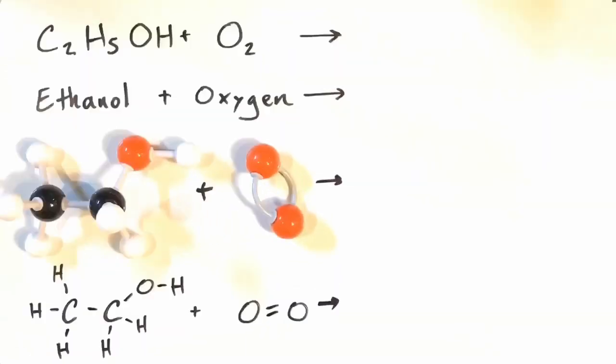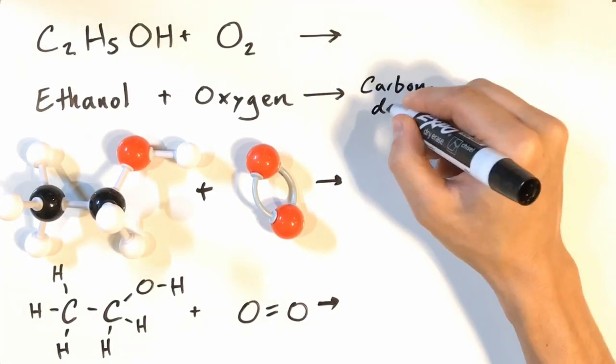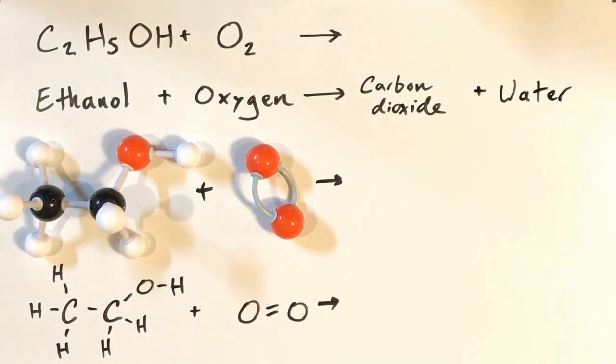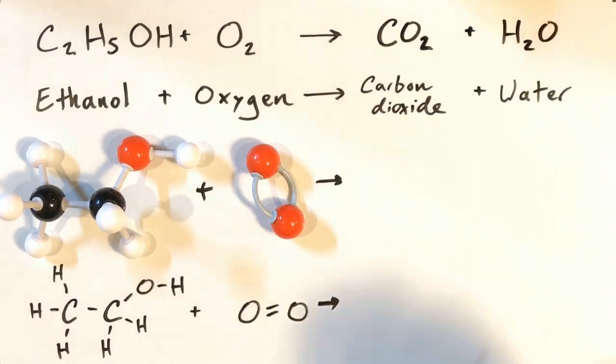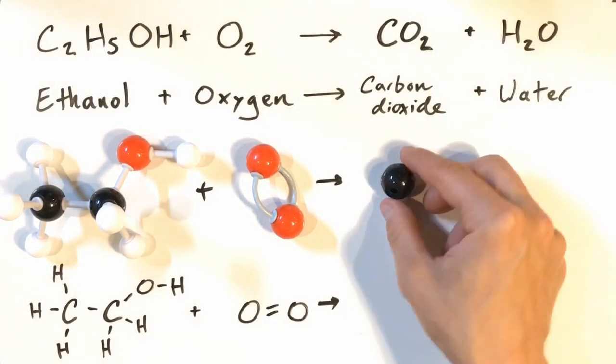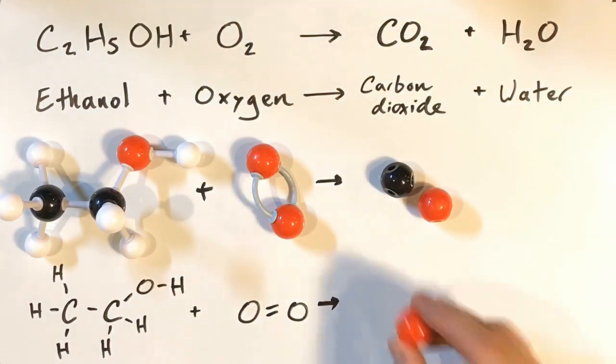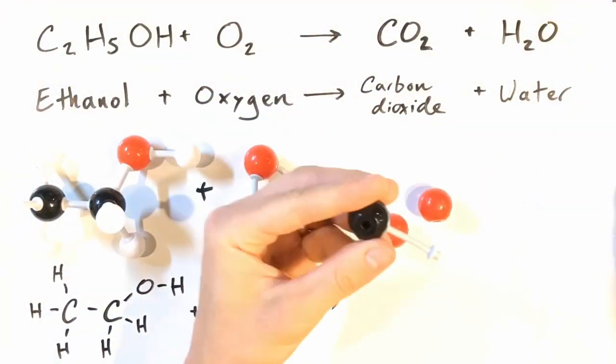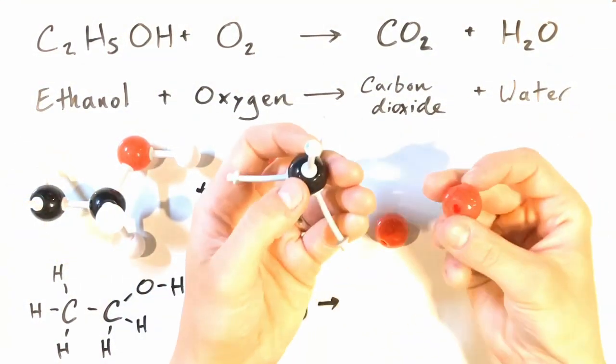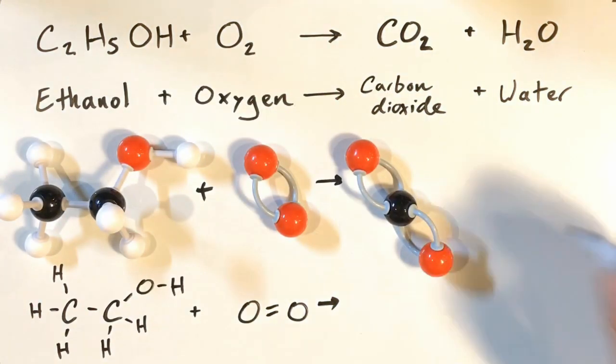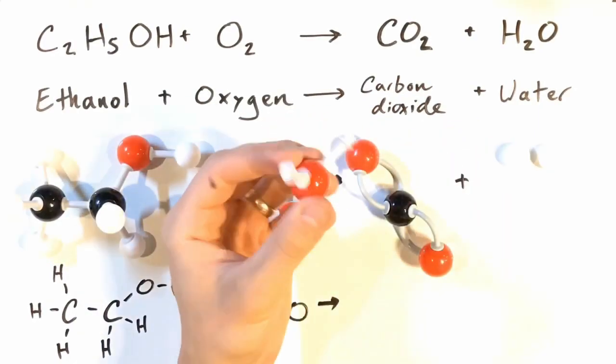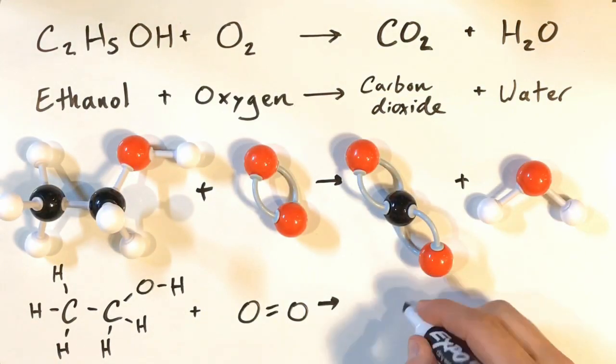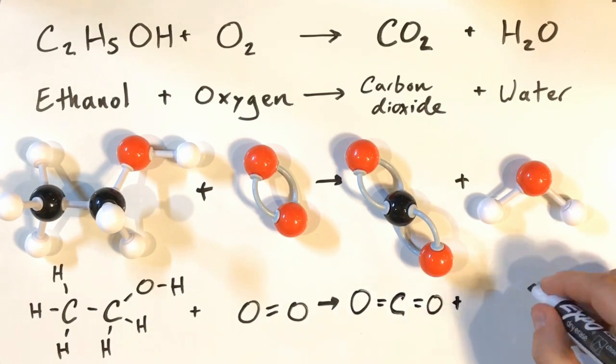So, let's do the right side of our reaction, the products, in the same way that we did the left side, the reactants. We can write them out in words. We can also write out the chemical formulas. We can build them using the same bonding rules that we used for ethanol and oxygen. And finally, we can draw out their molecular structures based on the models we built.